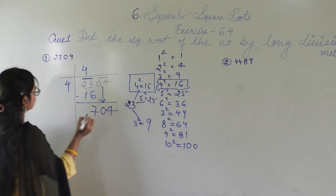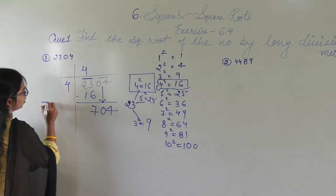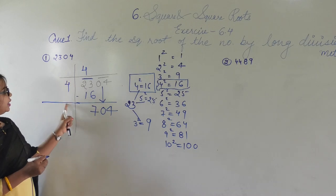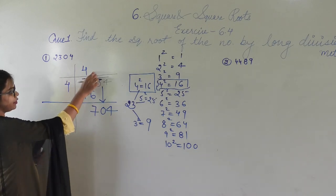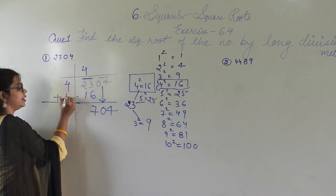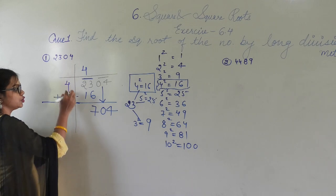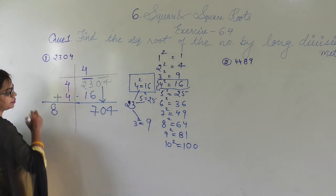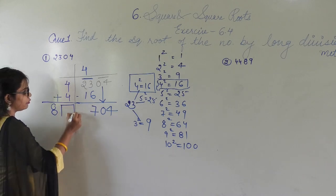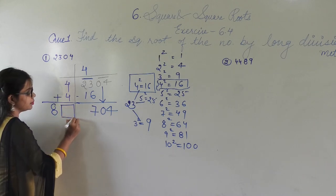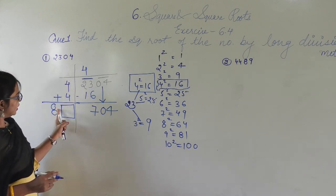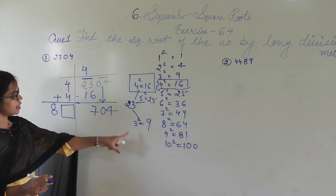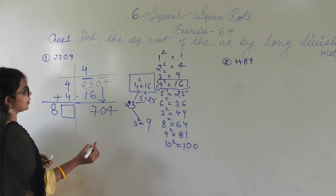In the long division method, the number we multiplied — which is 4 — gets added below. So 4 plus 4 equals 8. Now we have 8 at the bottom, and we need to choose a digit to append to 8 such that when multiplied by itself, we get 704 or less than that.